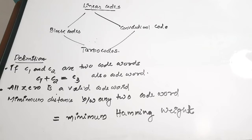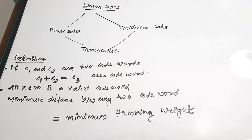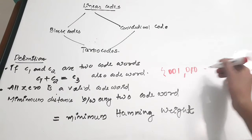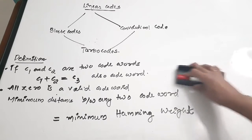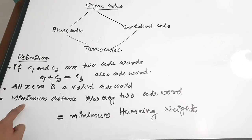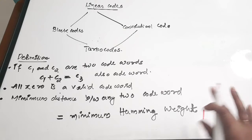So if there is a set of codes in which C1 and C2 are present, then C1 plus C2 equal to C3 should also be present in that set. That is the first property. The second property is that the all-zero word is a valid code word — for example, if a set contains 010 and similar words, 000 must also be a valid code word. That is the second property.